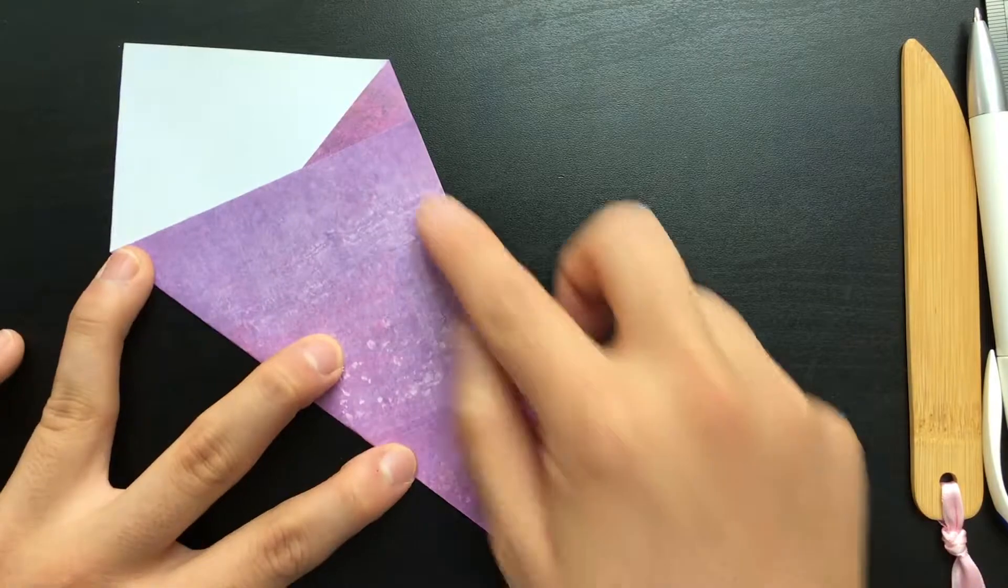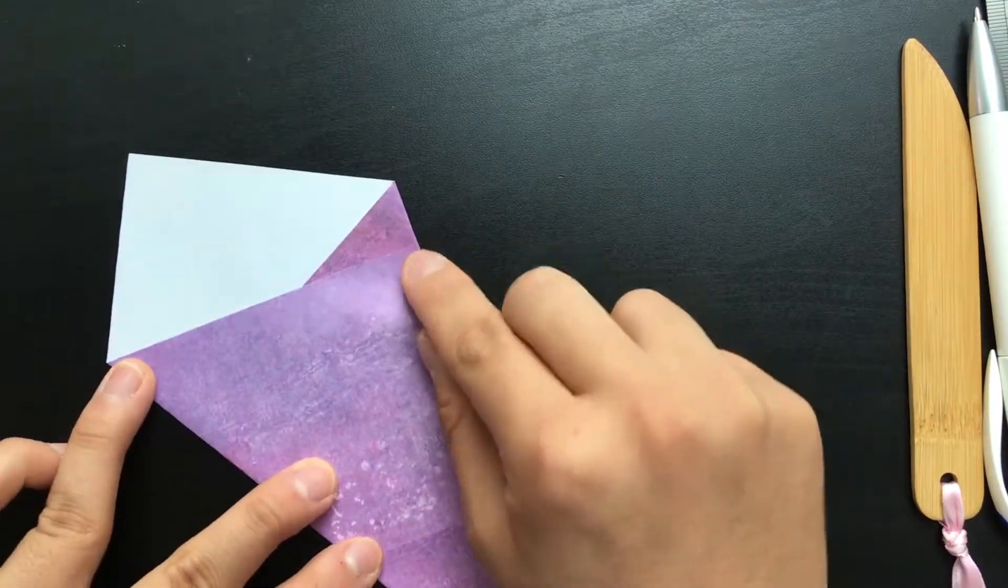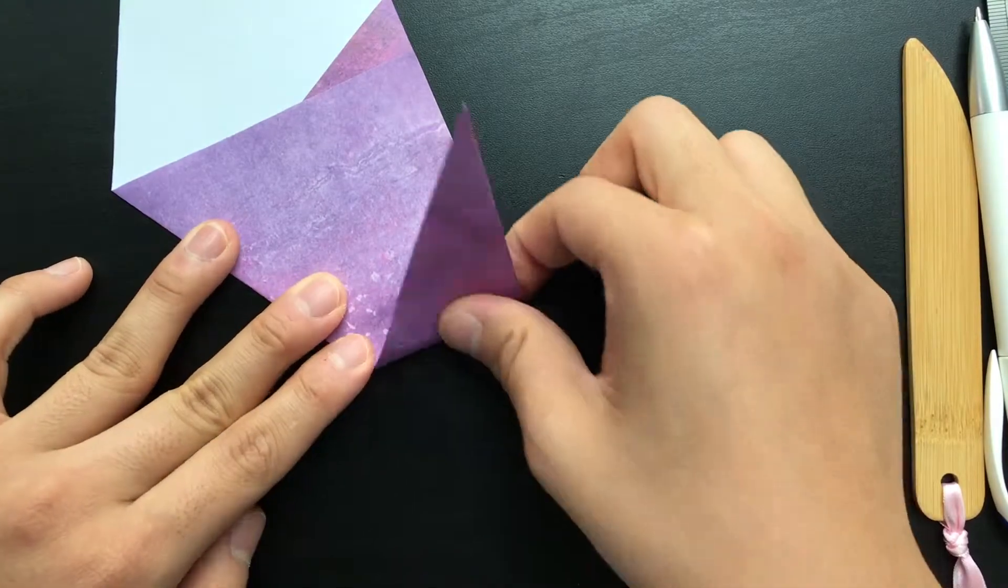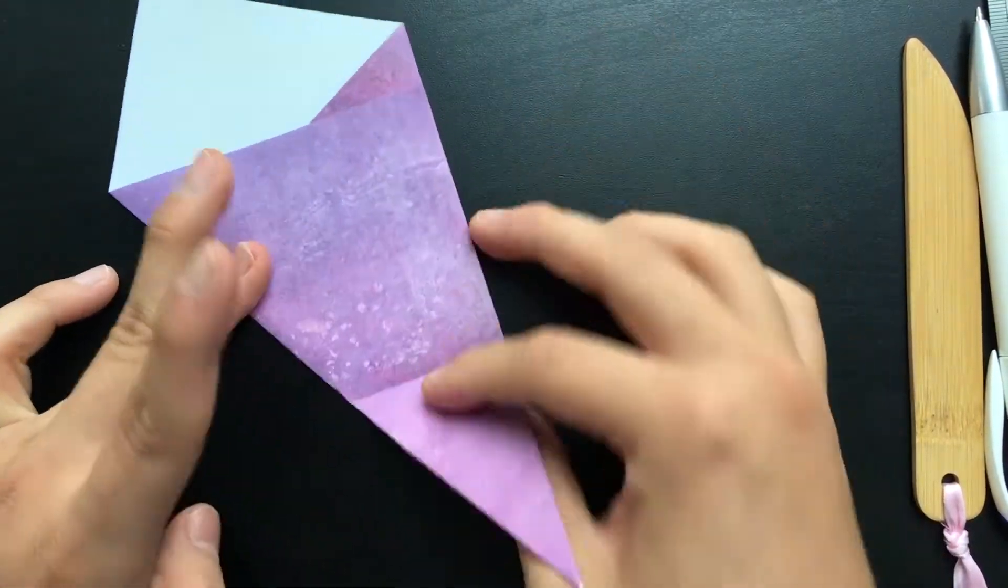Next, what you want to do is take the tip and fold it up to the corner right there. And if you do this right, it'll be along a crease that you already made. We're just extending it throughout the entire paper.